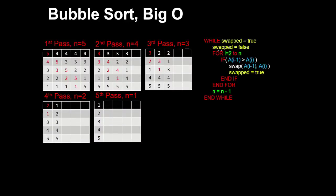Today we'll look at the bubble sort algorithm, which sorts an array of numbers. We have a while loop for each pass, and initially the swapped flag is set to true. In the first pass it's set to false, and then a for loop iterates through the numbers in the array.